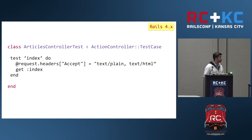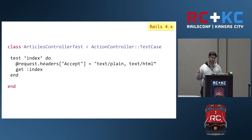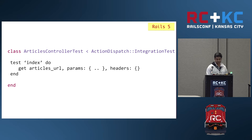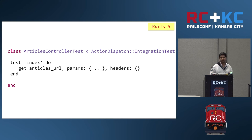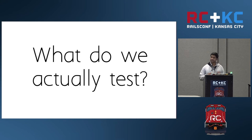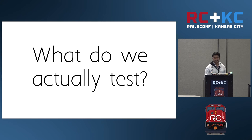We were also previously able to access and assign headers directly using `request.headers`. That is also not possible now, because integration tests don't have direct access to those headers. We have to pass those headers explicitly as keyword arguments — similar to how we pass params, we can also pass whatever headers we want on our request.